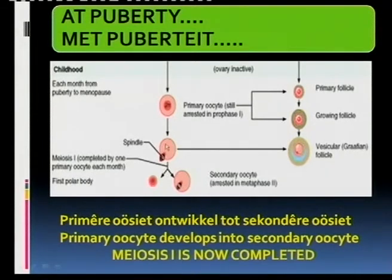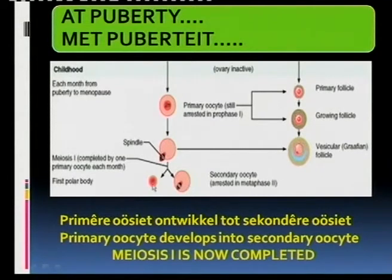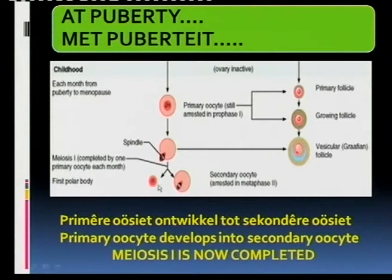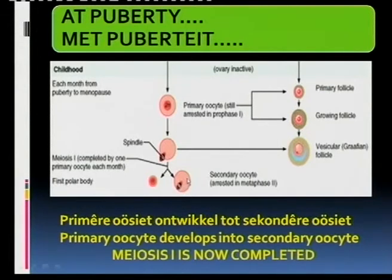And this diploid cell undergoes meiosis — the reduction of the chromosome number. After meiosis 1, they have half the number of chromosomes, which is haploid or 23 in each cell. You will also find that one cell is smaller than the other because the first polar body is formed. But this secondary oocyte will contain the ovum that will mature.